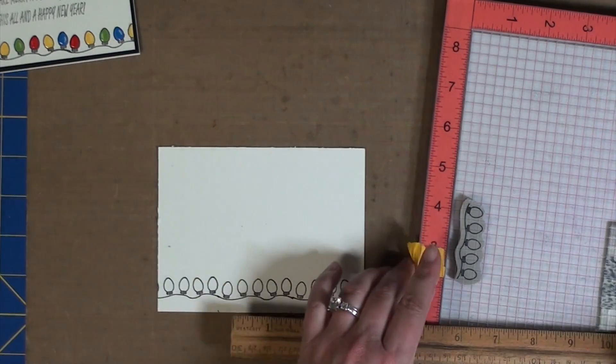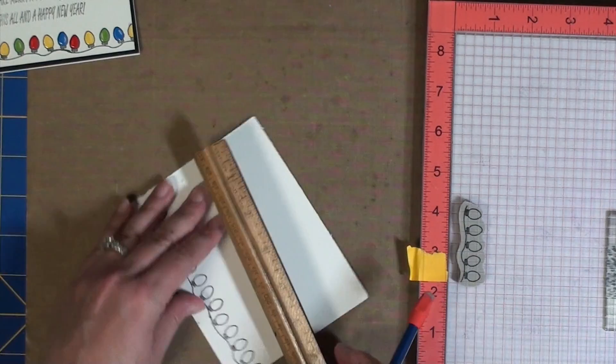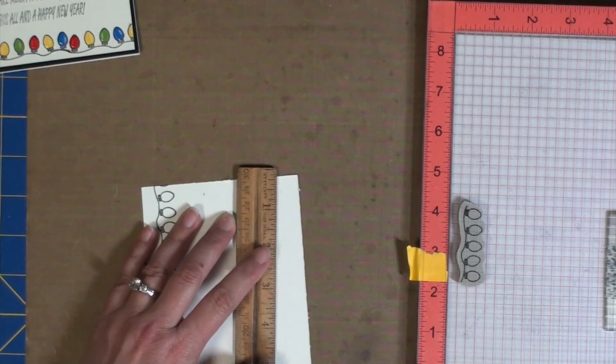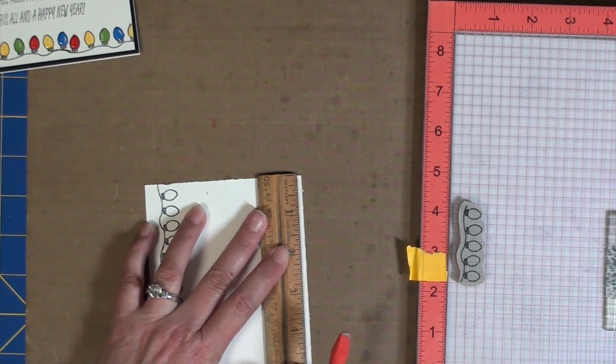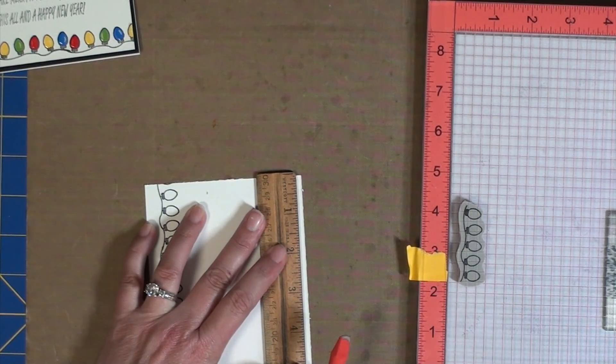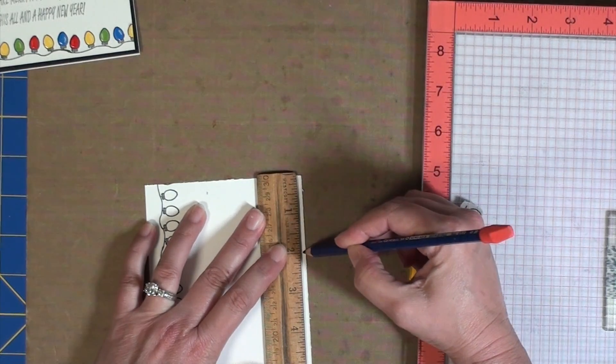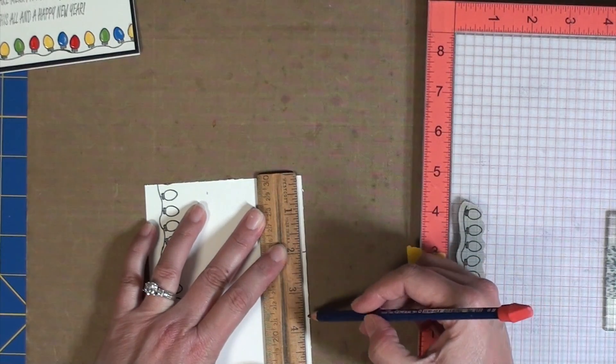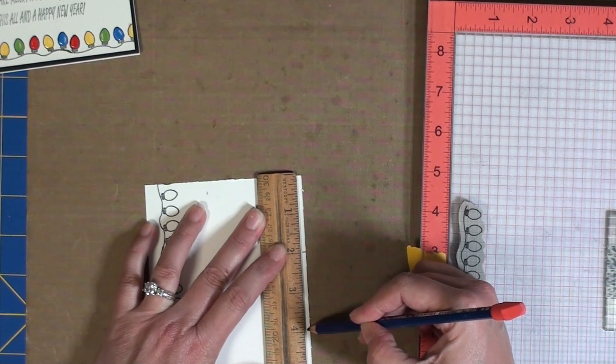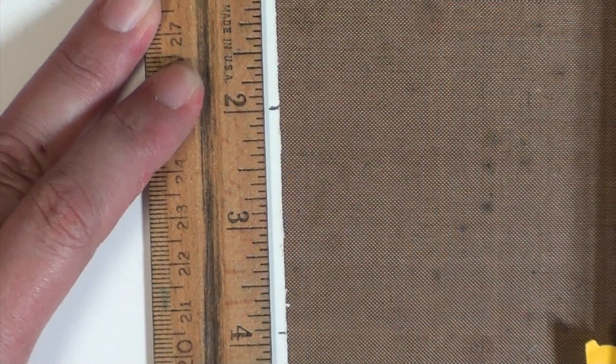So taking the ruler I marked it at two different places on here. This is a four and a quarter by five and a quarter panel. So I hung the edge of the ruler off so there was one sixteenth of an inch hanging off and marked it at the two inch mark and again at the three and fifteen sixteenth mark as you can see here.